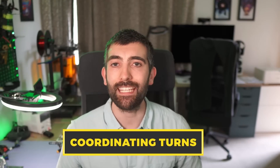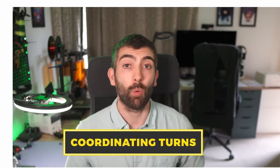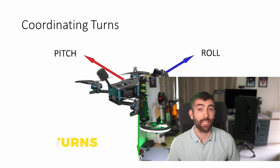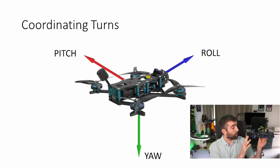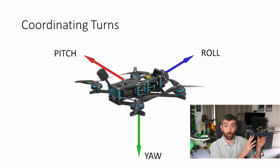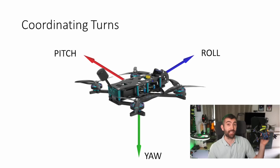So why do we even need to coordinate our turns? It's because we're working with two different coordinate systems when we fly our FPV drones. The first is the coordinate system of the quad — the quad has a yaw axis, a pitch axis, and a roll axis, and they're all independent.